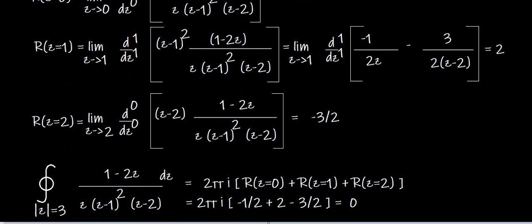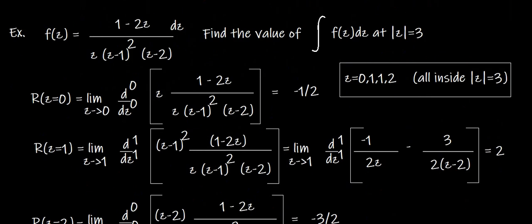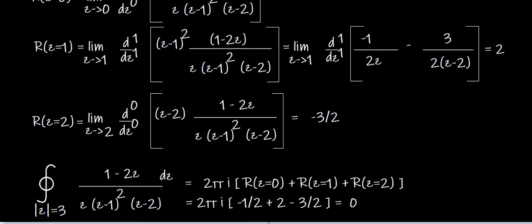This shows that a combination of poles can result in a zero integral. Cauchy's integral theorem gives zero when the function is analytic, but even with poles, their residues can sum to zero so the integral is zero. Thank you for watching — subscribe for more videos like this.